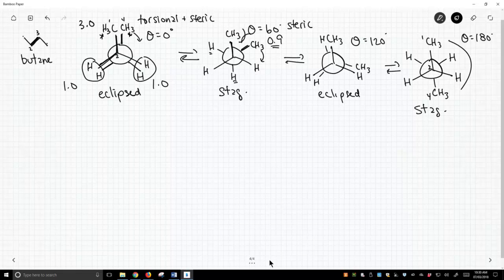Now we have this eclipse conformation. The hydrogen-hydrogen interactions are 1. This is a hydrogen-methyl eclipsing, which we saw from propane is 1.3. That's a torsional strain.